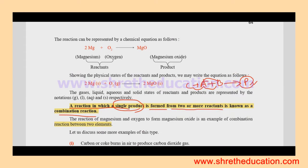The reaction can be represented by a chemical equation as follows: Magnesium reacts with oxygen to form magnesium oxide. For example, you have two reactants and one single product formed.